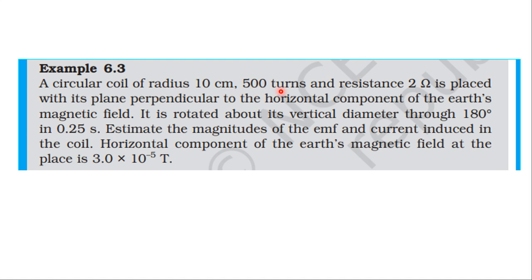A circular coil of radius 10 cm, 500 turns, and resistance 2 ohm is placed with its plane perpendicular to the horizontal component of Earth's magnetic field. It is rotated about its vertical diameter through 180 degrees in 0.25 seconds. Estimate the magnitude of EMF and current induced in the coil. The horizontal field is 3 × 10⁻⁵ tesla.